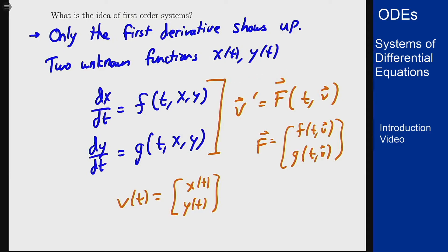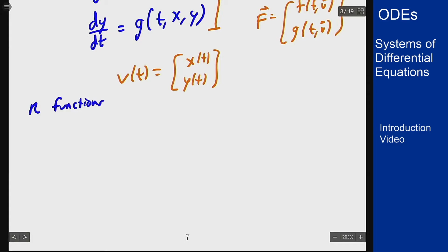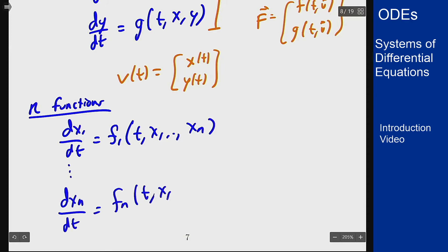In more generality, I can have n functions or n components and I'll have each one looking like the derivative of x1 with respect to t is some function f1 of t, x1 up through xn, and on down the line up to dxn dt is the function fn of t, x1 up through xn. And again, we tend to like to stack these in vectors because it makes all of it look very similar much the same. I can write this as the vector x prime equaling some function capital F of t and x, where again F is the stacking f1 all the way up to fn.